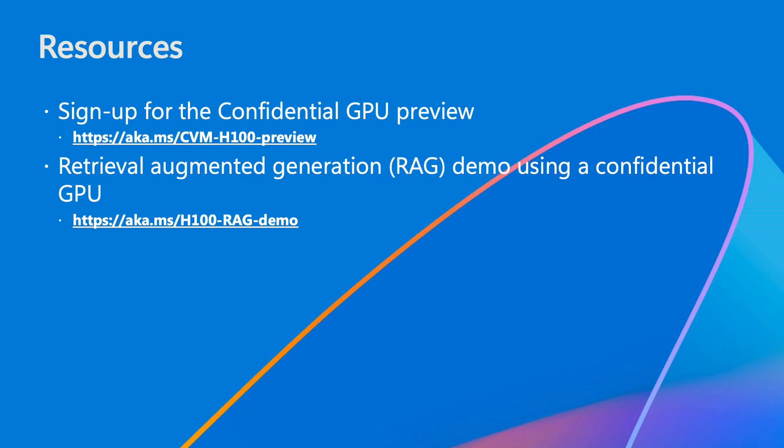Thank you, Yufei and Xiaobo, for this wonderful demo. Let's do a quick recap on resources to get started. If you haven't already signed up for the confidential GPU preview, you can sign up using this link: aka.ms/cvm-h100-preview. If you want to see the Miles Russinovich demo about confidential AI inference, you can find it at aka.ms/h100-ranc-demo. Thank you everyone for your time — we hope this was useful, and we look forward to you testing these VMs and sharing your feedback with us soon.